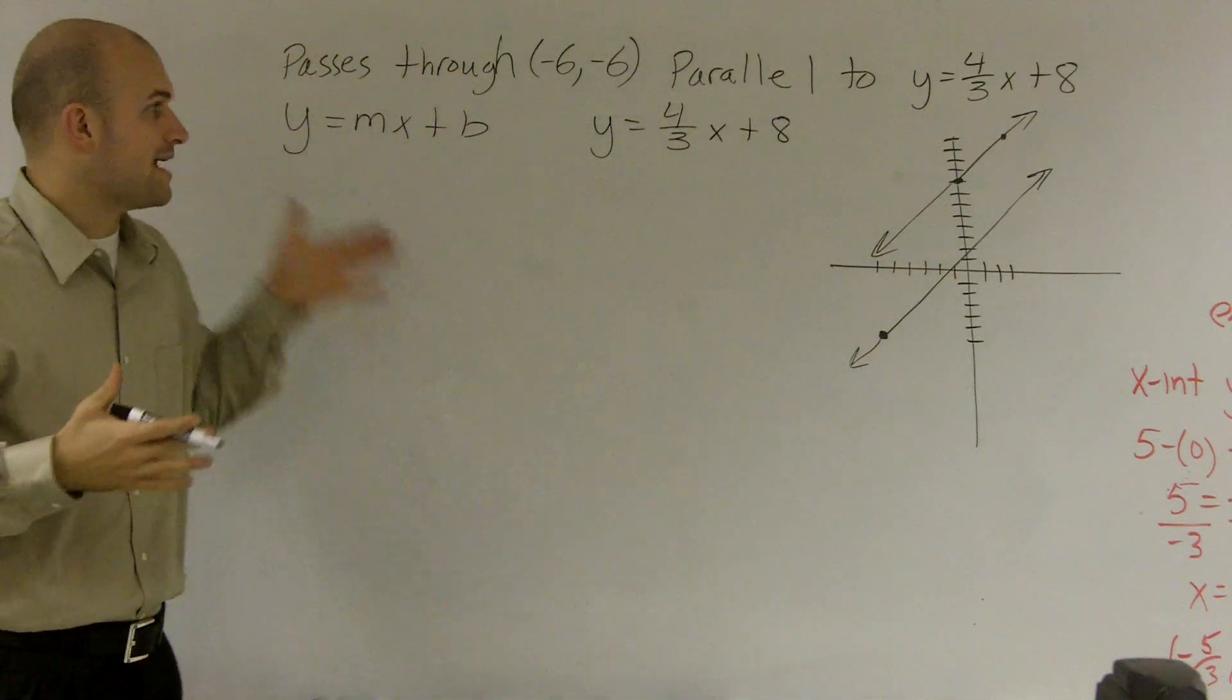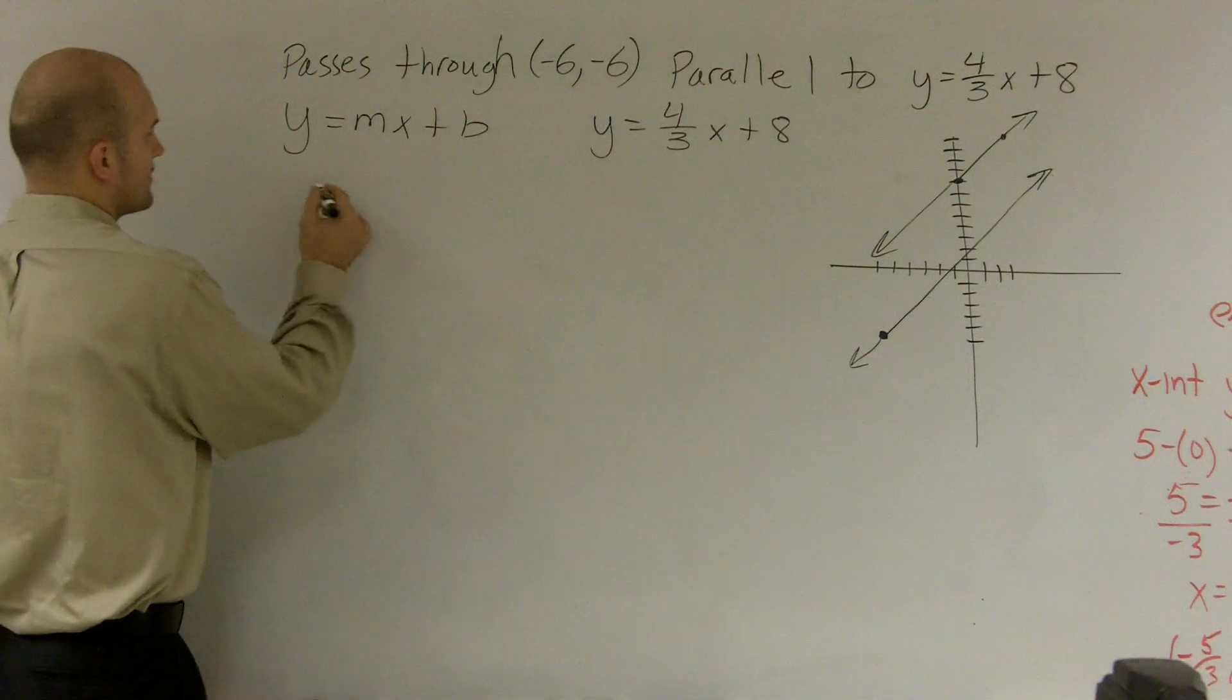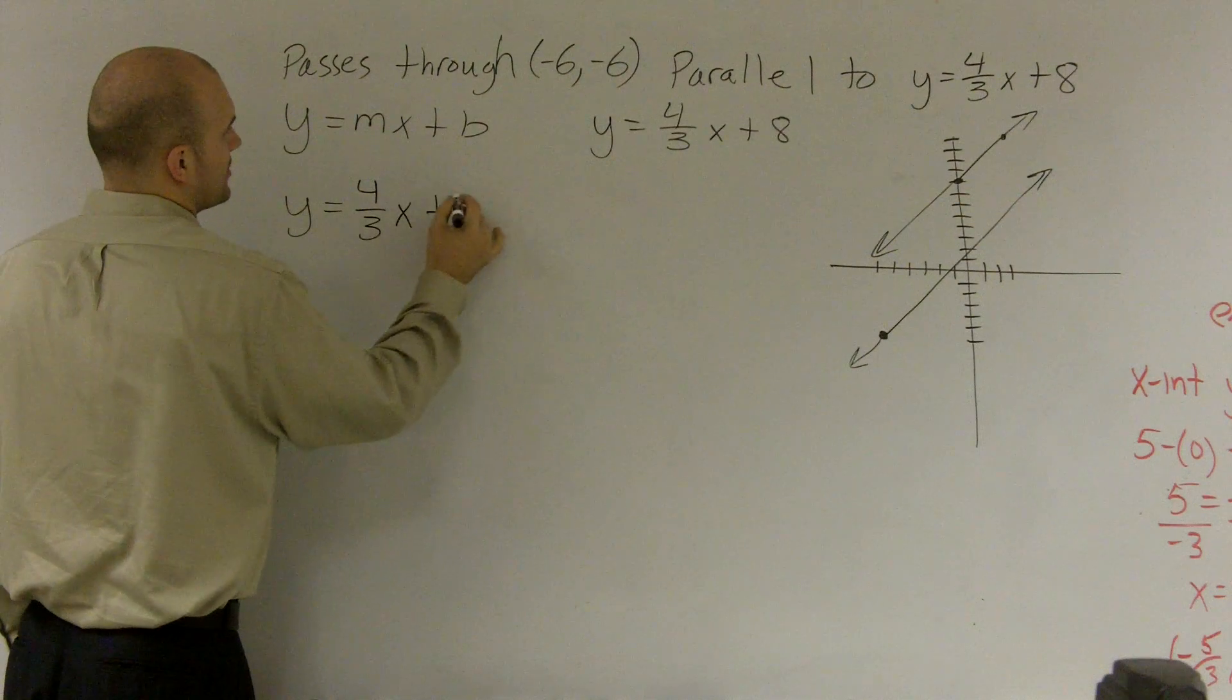Okay, so if I want to find a parallel line to it, I know it has to have the exact same slope. Right? So y = 4/3x + b.